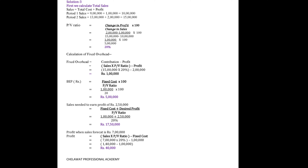Let us now discuss all the answers. For PV Ratio, the formula applied is: Change in Profit upon Change in Sales × 100. PV Ratio = 20%. For Fixed Cost, the formula is: Contribution minus Profit; and Contribution = Sales × PV Ratio. Fixed overhead = ₹1,00,000. For BEP Sales, two formulae are: Fixed Cost upon PV Ratio (for BEP in value) and Fixed Cost upon Contribution per Unit (for BEP in units). If a desired profit to earn is given, the formula is: Fixed Cost plus Desired Profit upon PV Ratio. If a sales level is given and profit is required, the formula is: Sales × PV Ratio minus Fixed Cost.